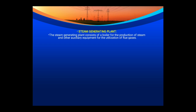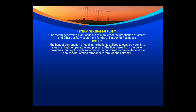The steam generating plant consists of a boiler for production of steam and auxiliary equipment for utilization of flue gases. There are two main types of boiler: fire tube boiler and water tube boiler. In thermal power plants, water tube boilers are predominantly used — water flows inside the tubes and ignition occurs around them. Fire tube boilers are mainly used for steam engines and small captive power plants. The heat from combustion of coal converts water into steam at high temperature and pressure. Flue gases from the boiler pass through the superheater, economizer, and air preheater, and are finally exhausted to the atmosphere through the chimney.